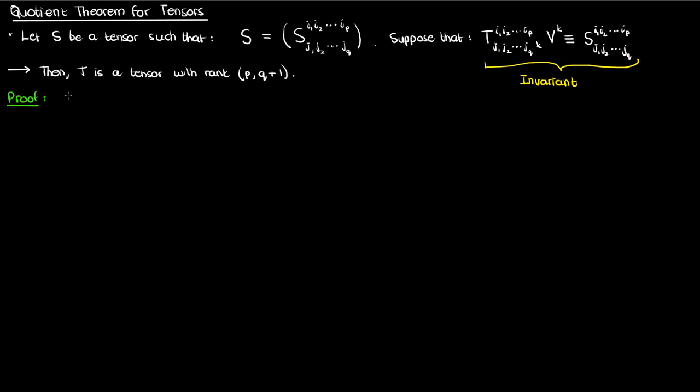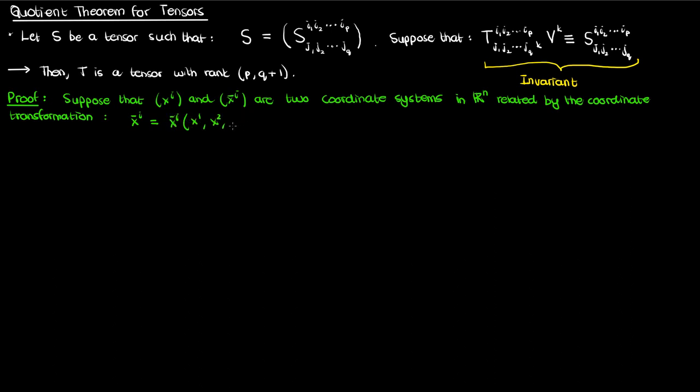A lot of these proofs use the transformation law at some point, so let me begin with the assumption that there is a coordinate transformation relating two coordinate systems: the default coordinates X super I and the post transformation coordinates X super I bar. This coordinate transformation is described using these N equations. I've only written one equation here, but keep in mind that I is actually a running index from 1 to N.